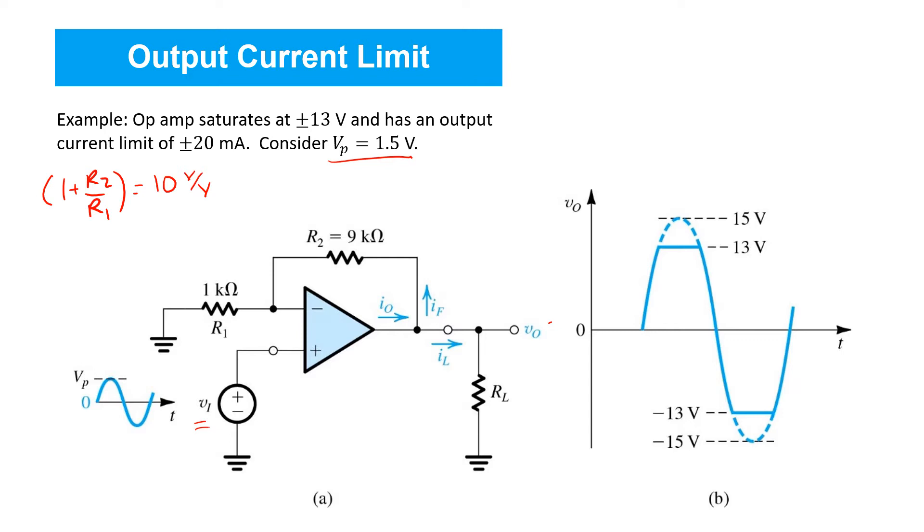Now, since the input peak is 1.5 volts, we would expect ideally the output peak should be at 1.5 times 10 volts per volt or 15 volts. But that exceeds the output saturation voltage of the op-amp. Therefore, the output follows the input sinusoidal waveform perfectly as long as it stays within the limits plus minus 13. But when it tries to exceed those limits, the output clips and remains constant at the output saturation limits plus or minus 13.